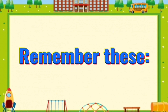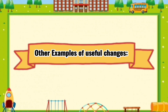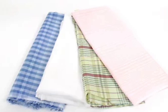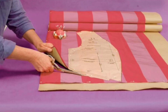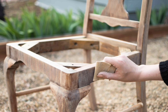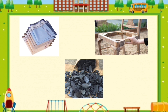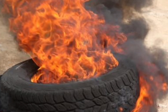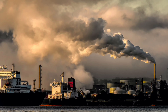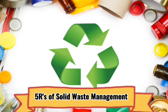Let us remember: some changes in materials are useful to the environment, while others are harmful. Other examples of useful changes are: cutting a piece of cloth to be made into a handkerchief, cutting fabric to be made into clothes, cutting and shaping pieces of wood into a chair, and changing wood into charcoal for cooking. Examples of harmful changes include burning of wood, burning of old tires and other plastic materials, and polluting the air, water, and land. Therefore, to keep our surroundings clean and to prevent or minimize pollution, people are encouraged to do the 5 R's.